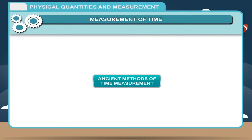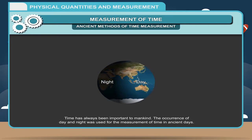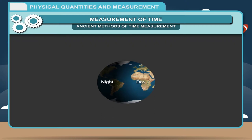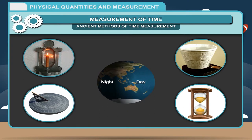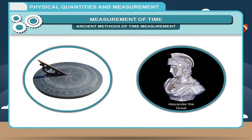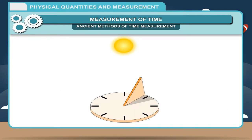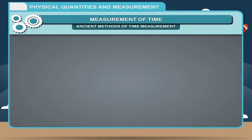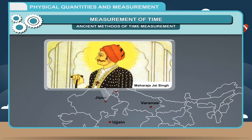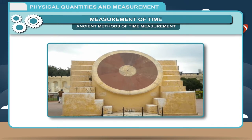Ancient methods of time measurement: Time has always been important to mankind. The occurrence of day and night was used for the measurement of time in ancient days. With the passage of time, a candle clock, a water clock, a sundial, and a sand clock were discovered for more accurate measurement. The sundial was used to record time in the days of Alexander the Great (300 BCE). It is based on the fact that the shadow of an object changes its position and length with the position of the sun in the sky. Some historical sundials still exist in India — situated in Ujjain, Jaipur, Delhi, and Varanasi, designed and built by Maharaja Jaisingh of Jaipur. However, these do not work after sunset or on cloudy days.